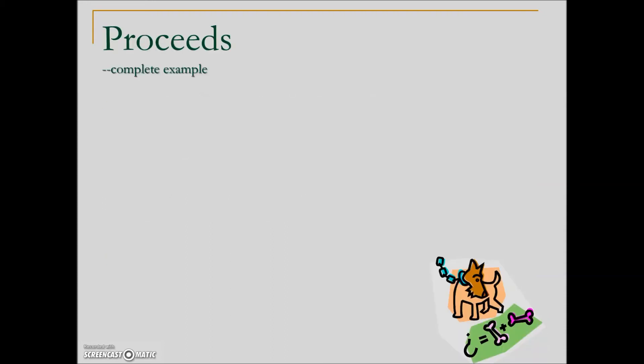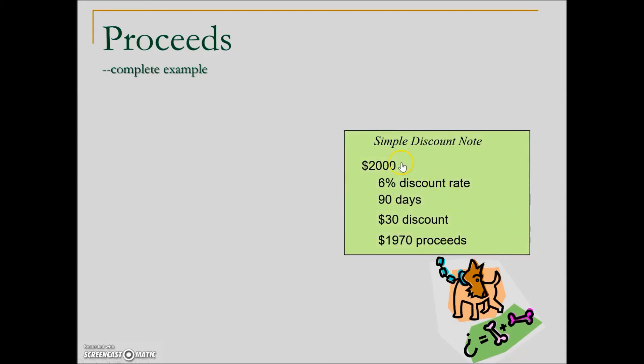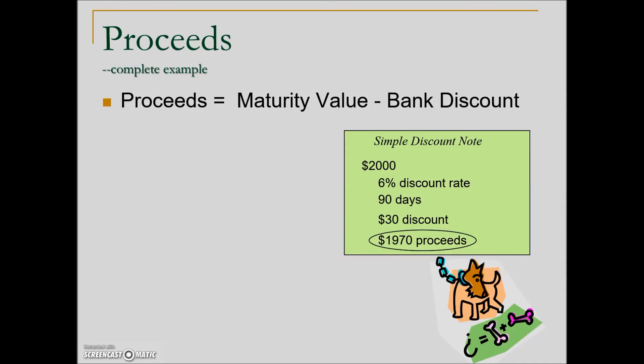Now let's calculate proceeds. We return to the $2,000 example with a discount rate of 6% and term of 90 days. The formula for proceeds is maturity value minus bank discount. We have maturity value $2,000, minus the calculated discount of $30, giving proceeds of $1,970. This is what the individual borrowing the money would have use of over the 90 days — they went in for $2,000 but because the interest was subtracted, they only have use of $1,970 during the loan.